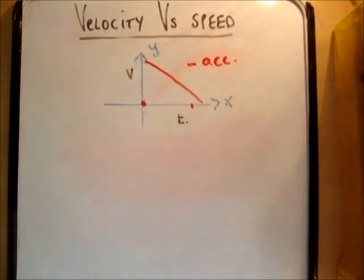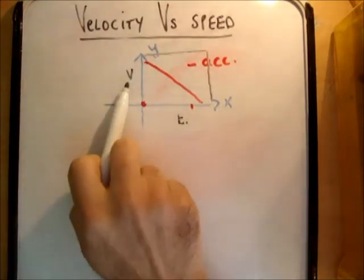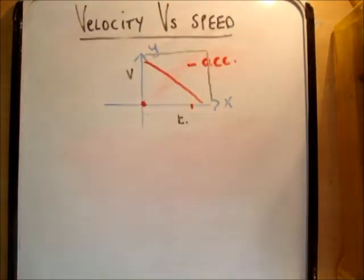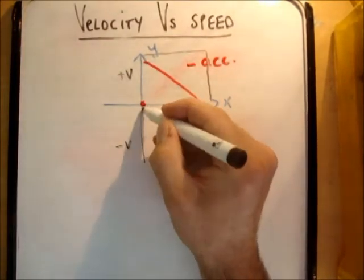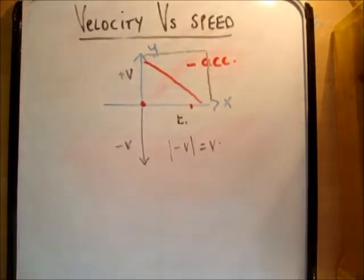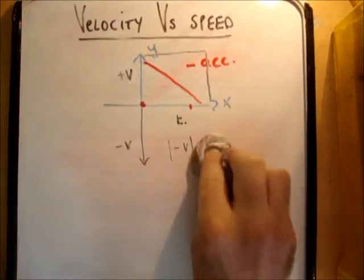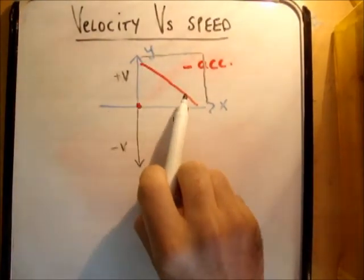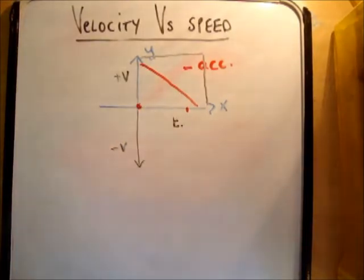In the velocity-time diagram, positive velocity means going in the positive direction and negative velocity means going in the opposite direction. The magnitude of a negative velocity is still positive — it just means the object is moving the other way. So if we have a negative acceleration with positive velocity, it will slow the object down.